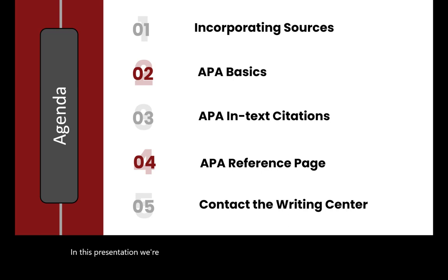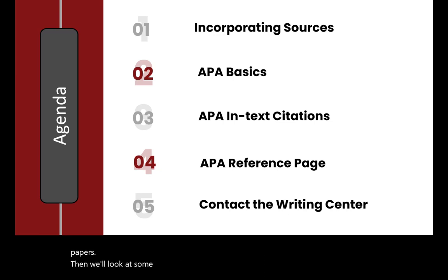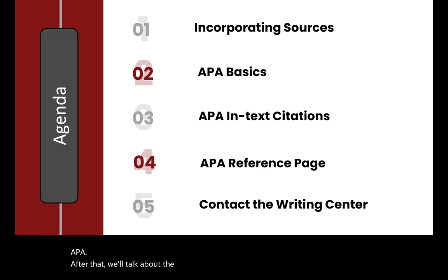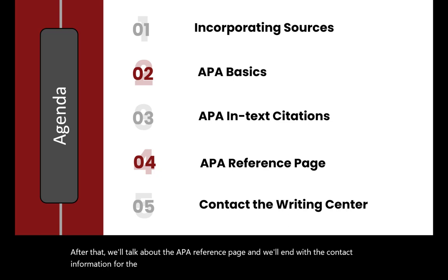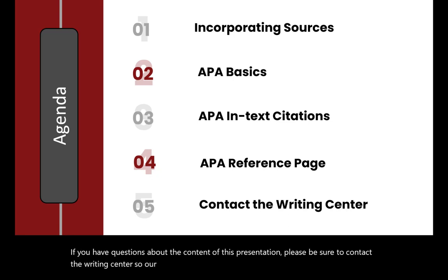In this presentation, we're going to focus on APA citation style, the style preferred for many disciplines in the social sciences. We'll talk first about three different ways you can incorporate sources into your own papers. Then we'll look at some APA basics before turning to what in-text citations look like for APA. After that, we'll talk about the APA reference page, and we'll end with the contact information for the Writing Center and some APA-related writing resources. If you have questions about the content of this presentation, please be sure to contact the Writing Center so our consultants can assist you. Our contact information is at the end of this presentation.